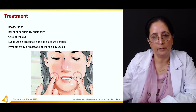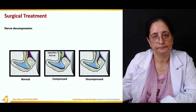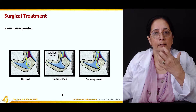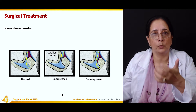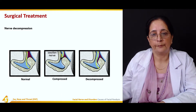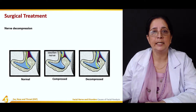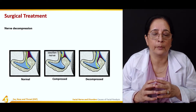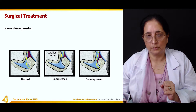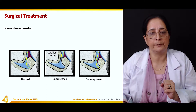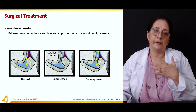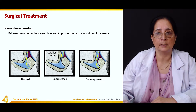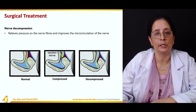Surgical treatment involves nerve decompression. If the nerve is compressed and swollen, it should be decompressed by removing the pressure from the nerve. This relieves pressure on the nerve fibers and improves circulation.